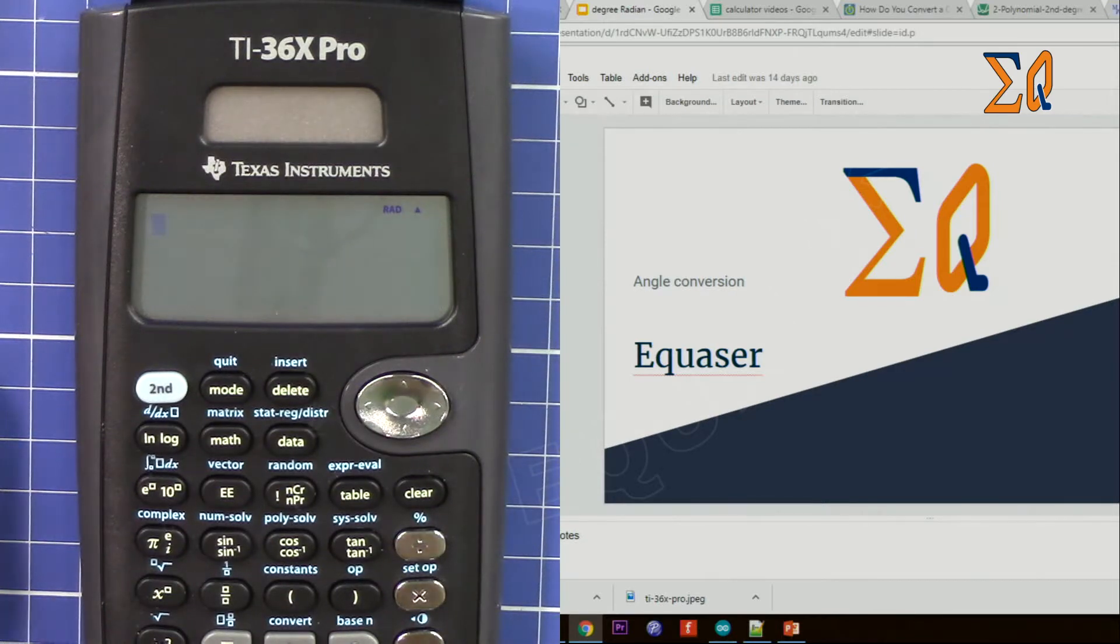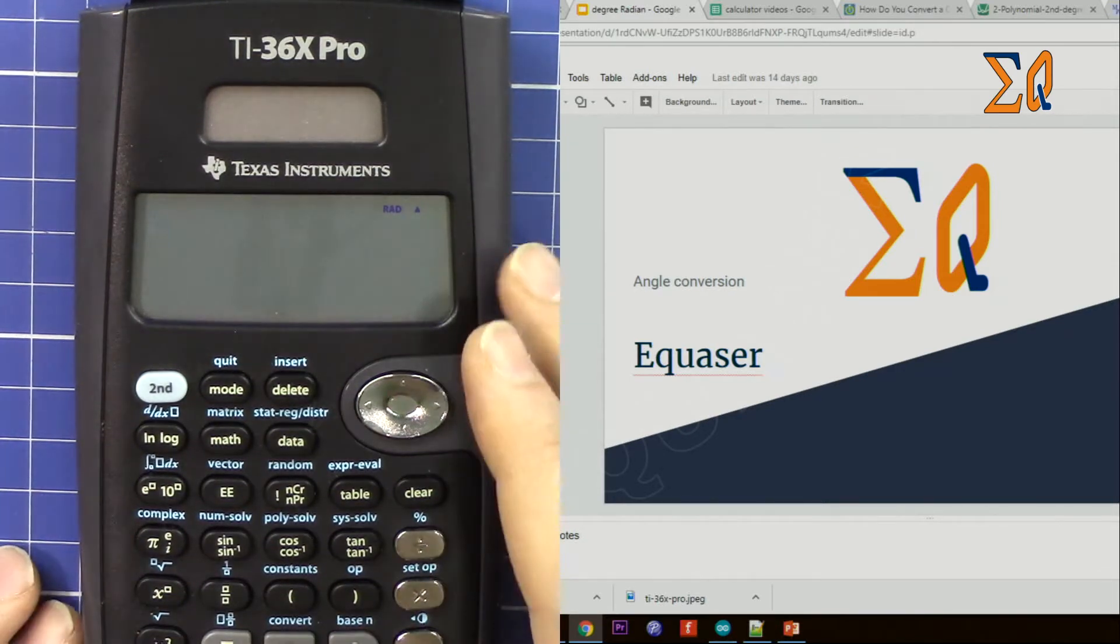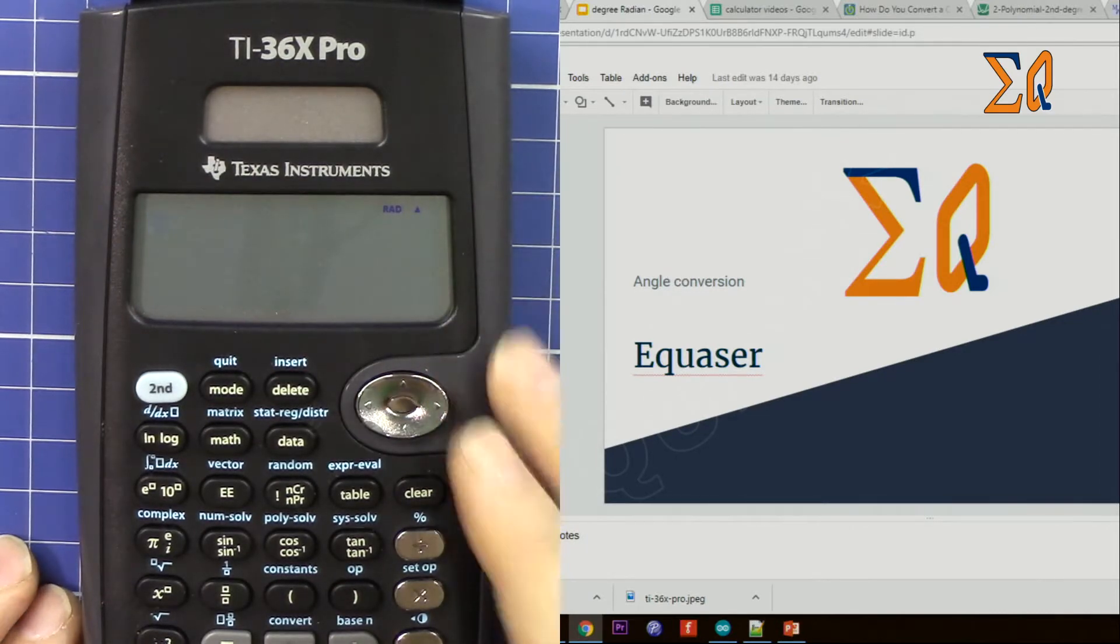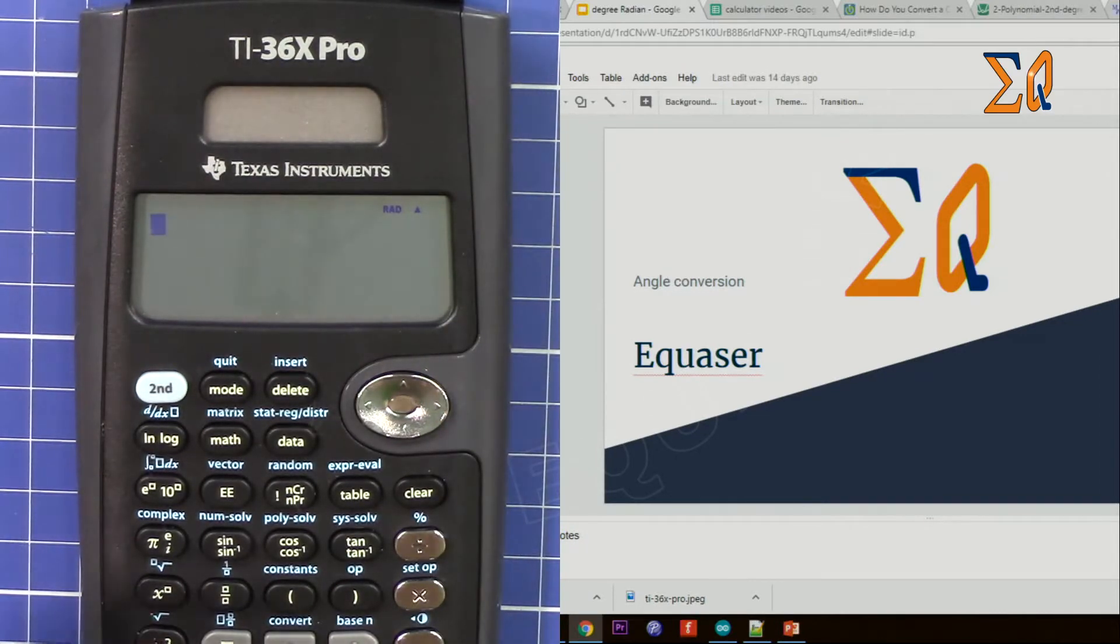Hi, welcome to Equasor. In this video I'm going to show you how you can use this TI-36x Pro calculator to convert angles from degree, radian, and gradient to one another.